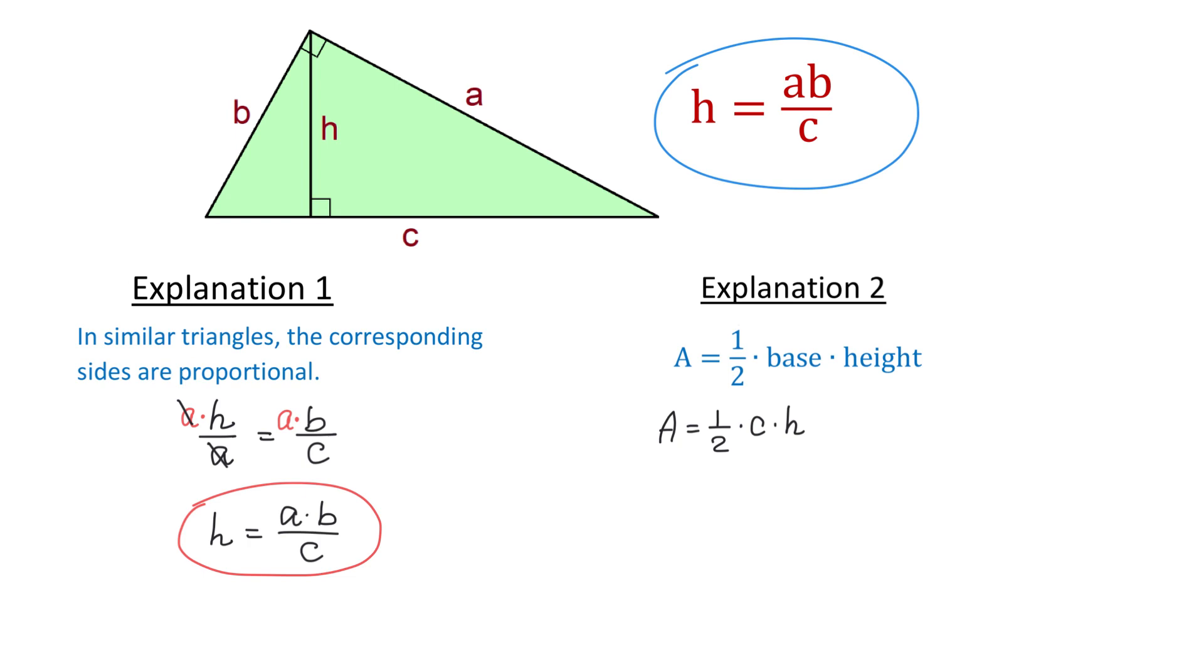On the other hand, what if we consider side B to be the base of this triangle? Then side A will be the height because it is perpendicular to B. Then using the sides B and A, we can write that area equals 1 half times B times A.